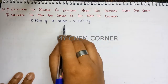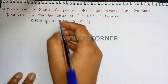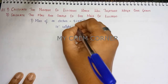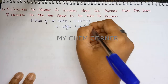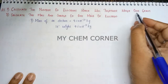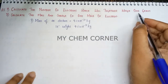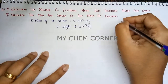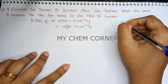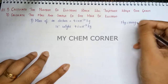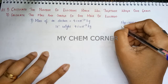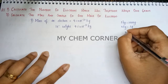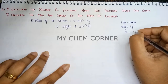Since one electron weighs 9.1 × 10⁻³¹ kilogram, we need to find how many electrons weigh 1 gram. We can't work in grams since our answer is in kg, so we convert: 1 kg equals 1000 grams, therefore 1 gram equals 10⁻³ kg. Using the unitary method, 1 gram = 10⁻³ kg.